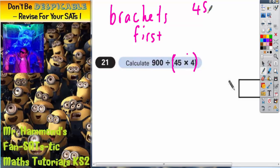So 45 times 4. Common method: 4 fives are 20, carry the 2. 4 fours are 16, plus 2 is 18. So what we're actually dealing with here is 900 divided by 180.